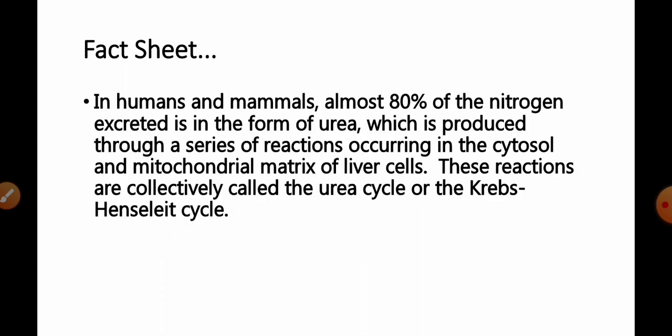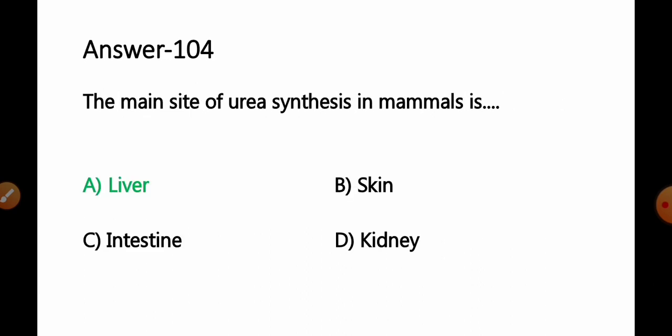Fact available for this question: In humans and mammals, almost 80% of the nitrogen excreted is in the form of urea which is produced through a series of reactions occurring in the cytosol and mitochondrial matrix of the liver cells. These reactions are collectively called as the urea cycle or the Krebs-Henseleit cycle. So we can say it occurs in the liver. So option A. Liver will be the correct answer where urea cycle or synthesis of urea occurs.